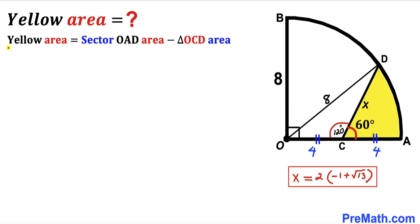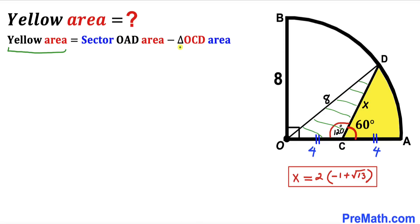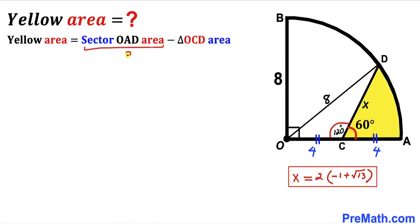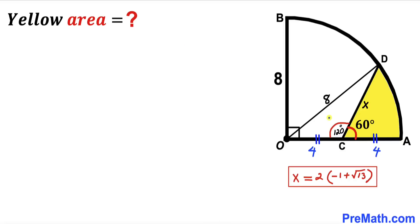Now let's make an observation: the yellow shaded region area equals the sector OAD area minus the triangle OCD area. So our task is to calculate the area of sector OAD and the area of triangle OCD.